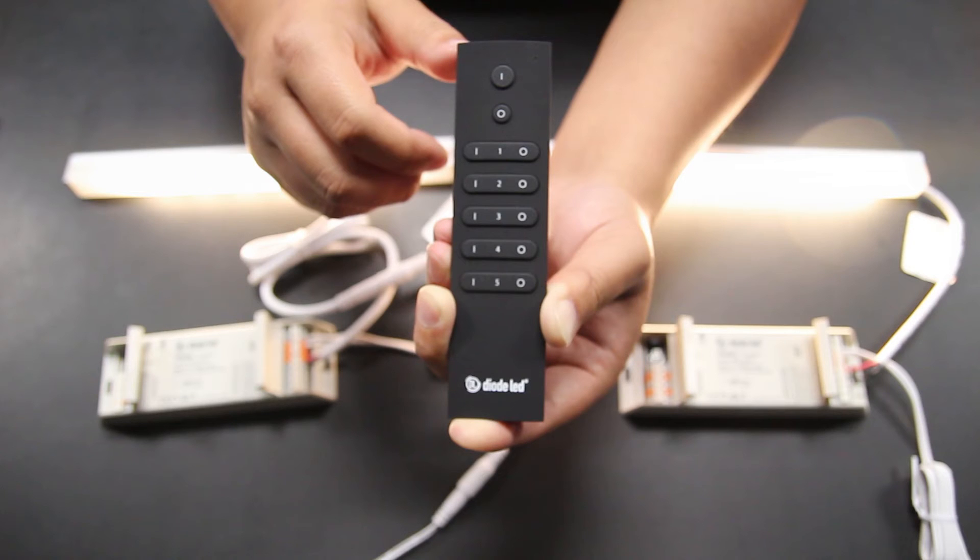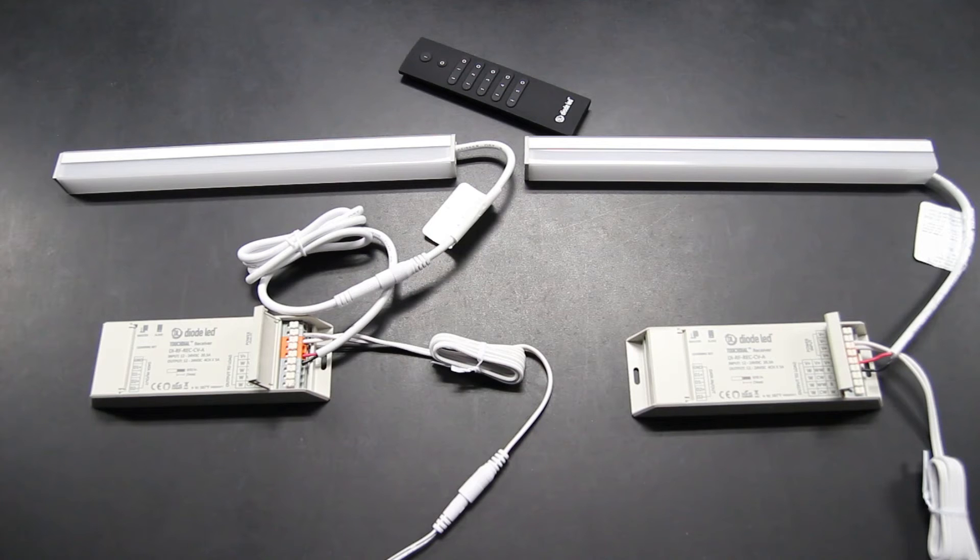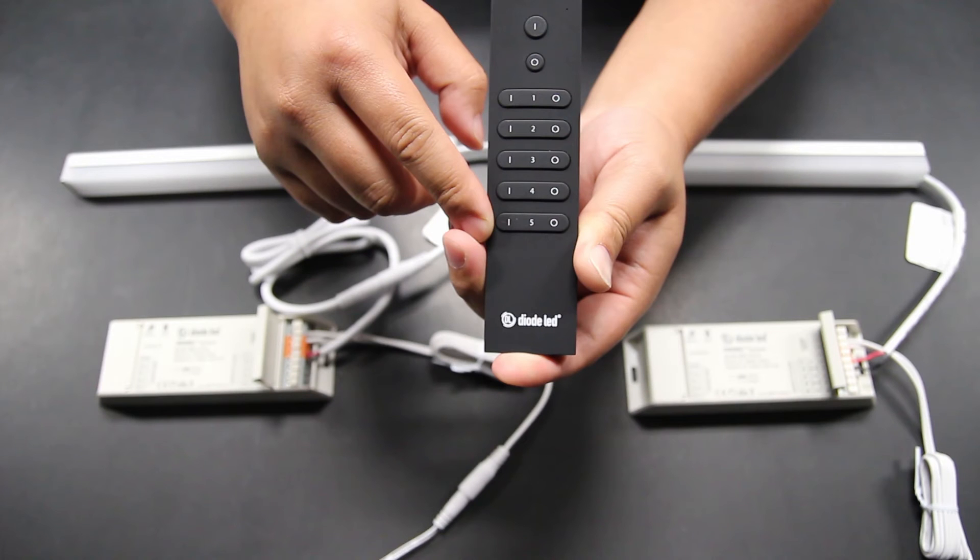The five-zone single color dimmer remote contains a master on and off button found on the top of the remote labeled I and O respectively. The zone control is divided into five buttons respectively labeled on the face of the remote control as well.